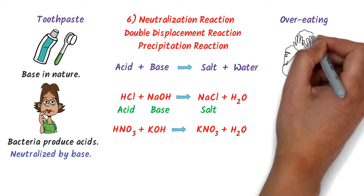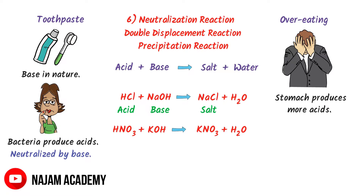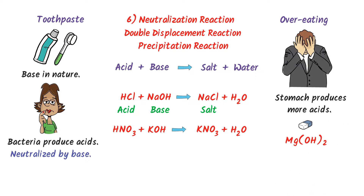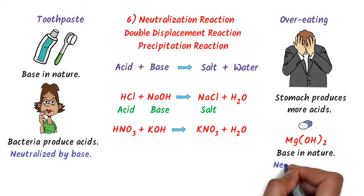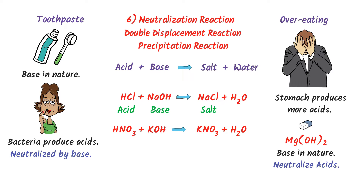Secondly, due to overeating, our stomach produces more acid which causes several problems. To neutralize the acid in our stomach, we use magnesium hydroxide, which is basic in nature and reduces acid in our stomach. I hope that you have learned all about the different types of chemical reactions.